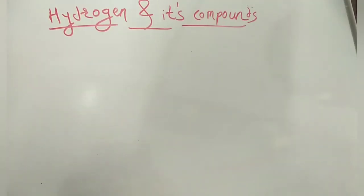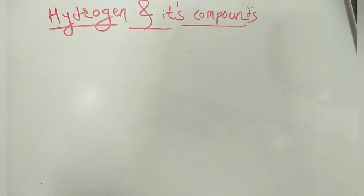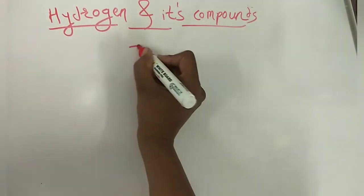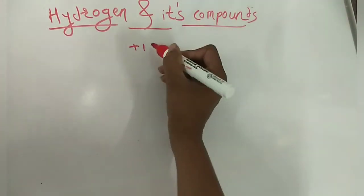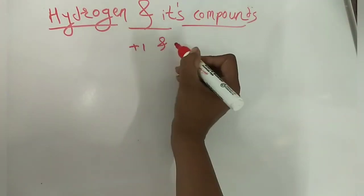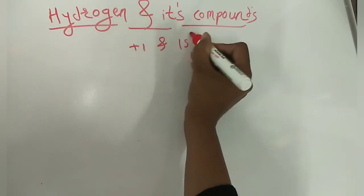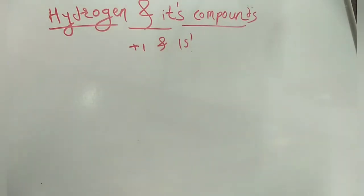Hydrogen is the most simplest atom of the periodic table. It contains only one proton, has a charge of plus one, and its electronic configuration is 1s¹. Hydrogen atoms may attain stability in three different ways.